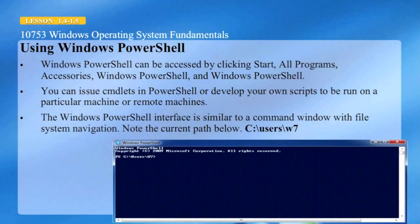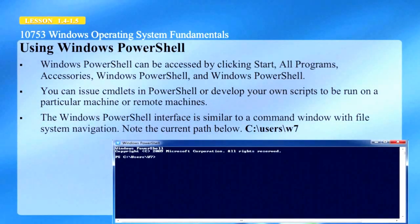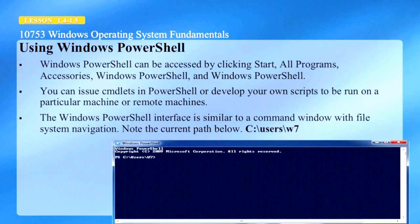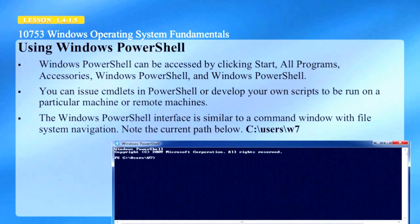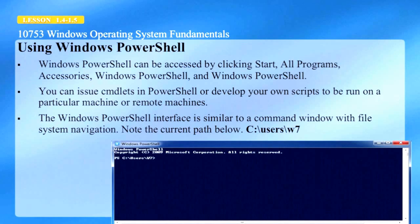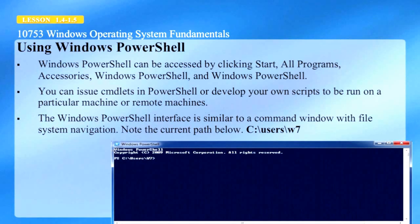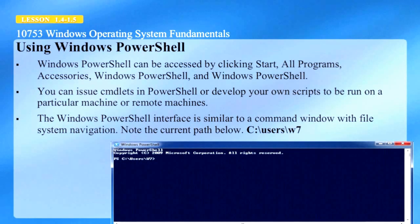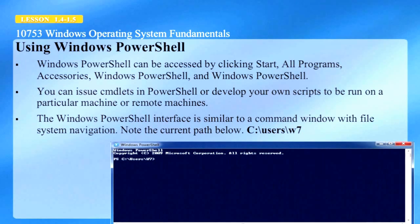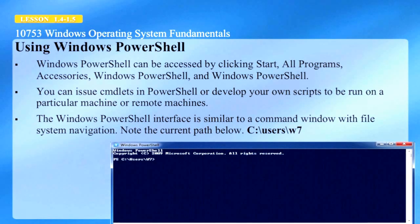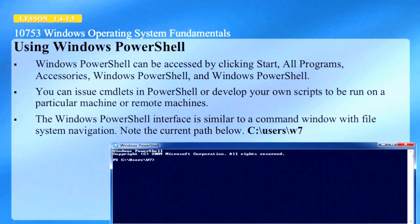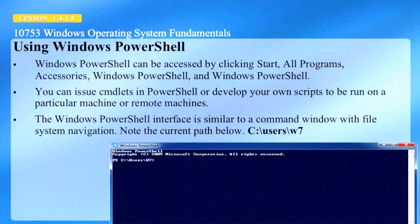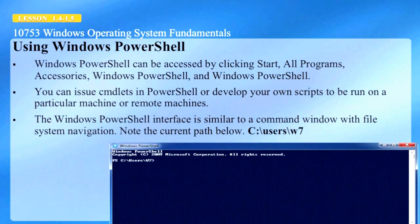Windows PowerShell is a powerful environment that cannot be fully appreciated in a short presentation. You can go to Microsoft's TechNet website to find out more information. You can access PowerShell by clicking Start, All Programs, Accessories, Windows PowerShell, and selecting Windows PowerShell. You can issue commandlets in PowerShell or develop your own scripts to run on a particular machine or even remote machines. The interface is similar to a command window with file system navigation, and in this screenshot the current path is C:\users\w7.